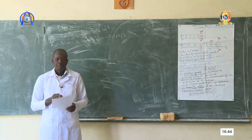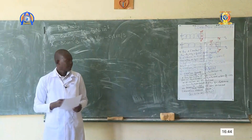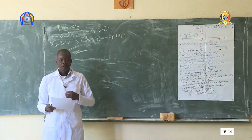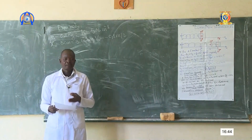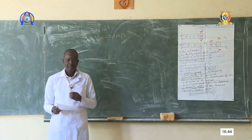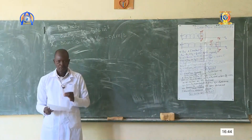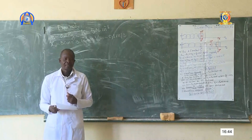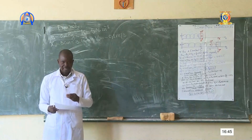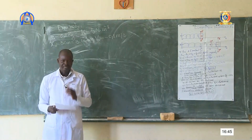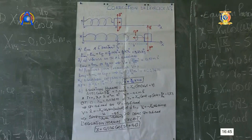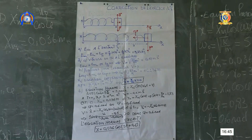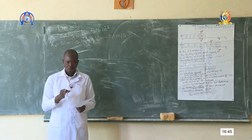Nous allons passer à la correction. Avant de commencer, on fixe le système à étudier : c'est le solide de masse M. Le référentiel d'étude est le référentiel terrestre, supposé galiléen. Troisième point, bilan des forces : nous avons trois forces — le poids, la réaction normale et la tension T du ressort.